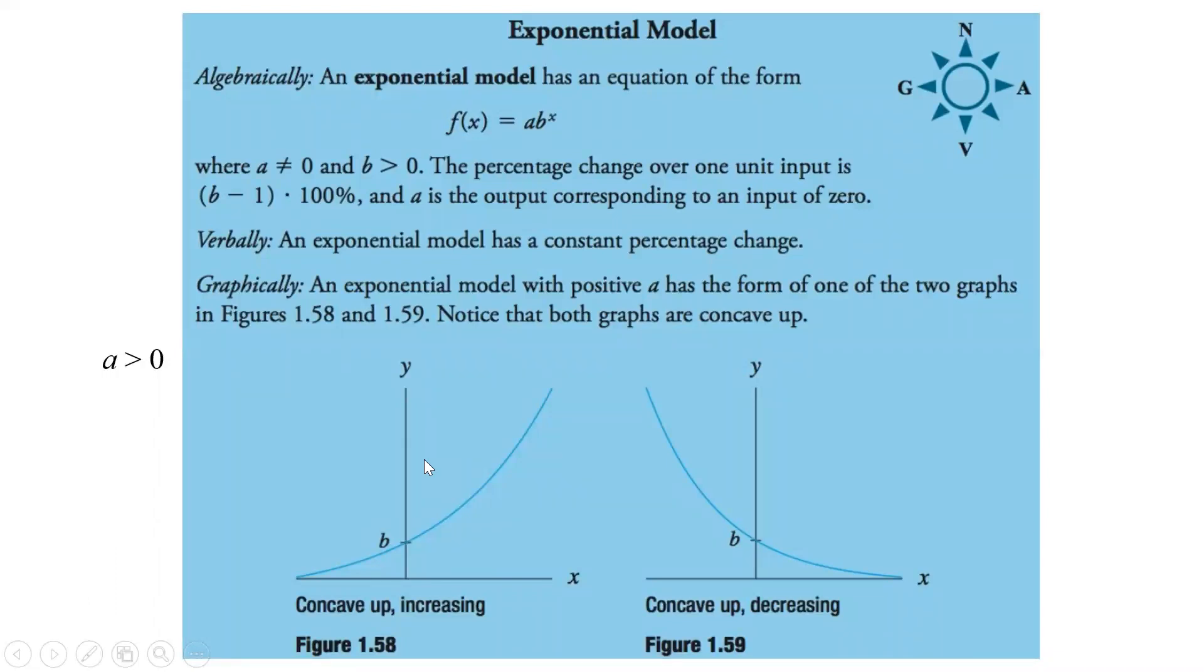Now, for the exponential model, we can look at it three ways here. Algebraically, we have what we've just seen: f of x equals a times b to the x. Then here, the key is a cannot equal 0, because if it was 0, then we just have 0. And b has to be greater than 0. So this is how it's going to work for increasing functions. We want to have b greater than 0.